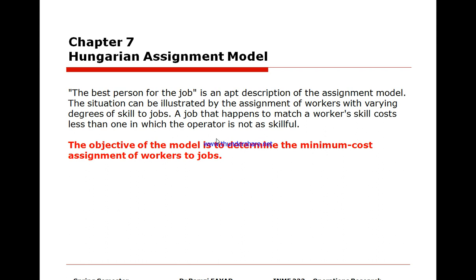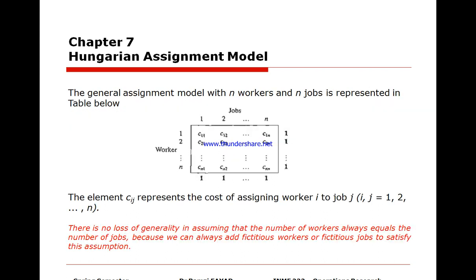The assignment model situation can be illustrated by the assignment of workers with varying degrees of skills to jobs. A job assigned to a skillful person costs less than one in which the operator is not skillful. The objective is to determine the minimum cost assignment of workers to jobs.